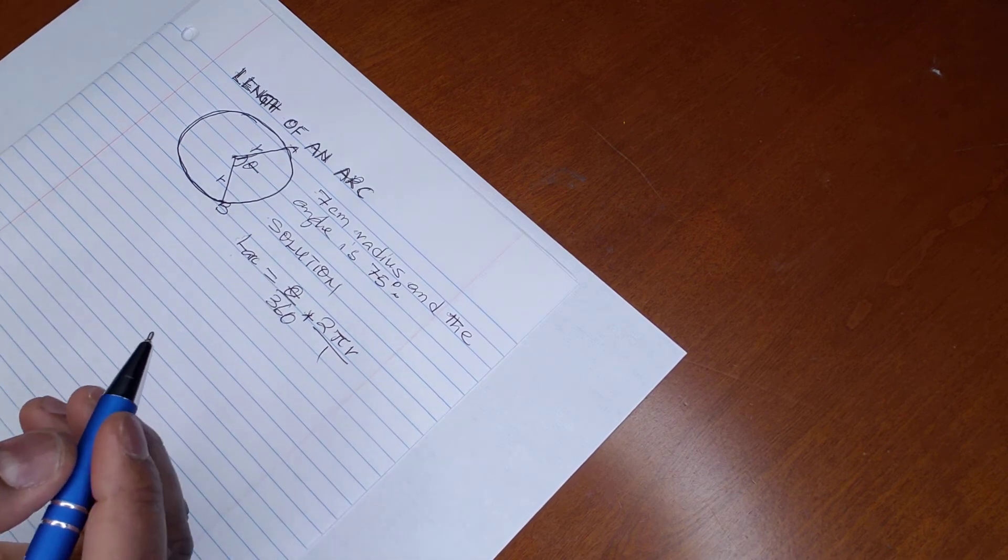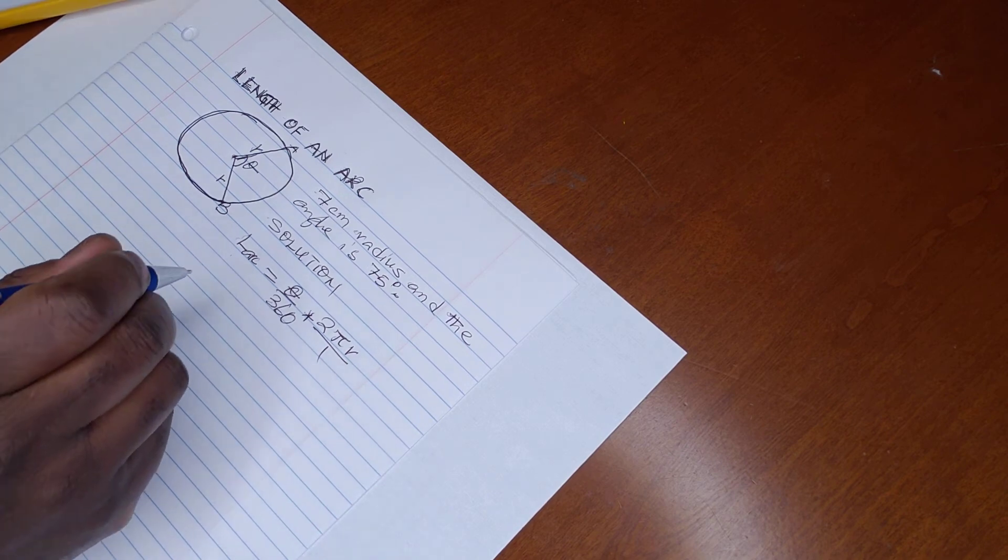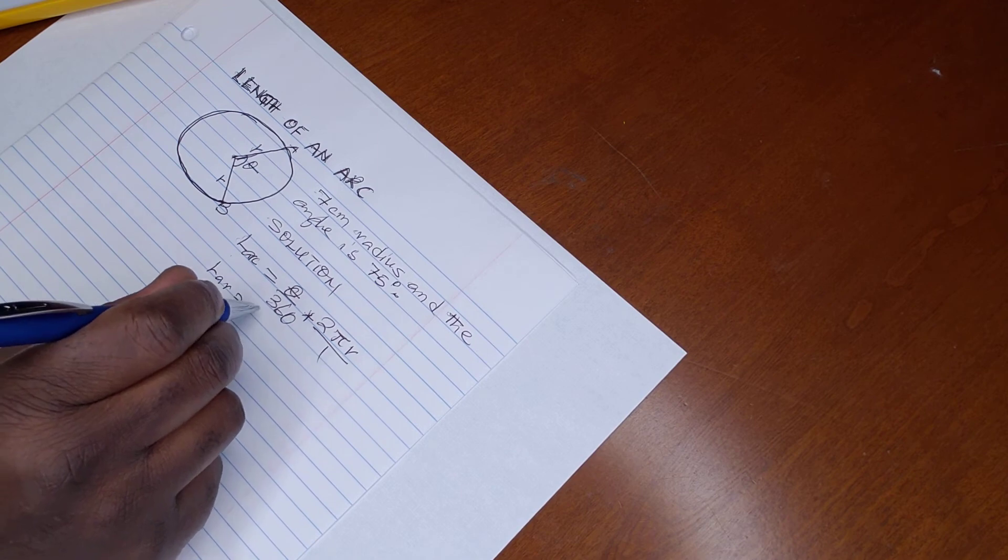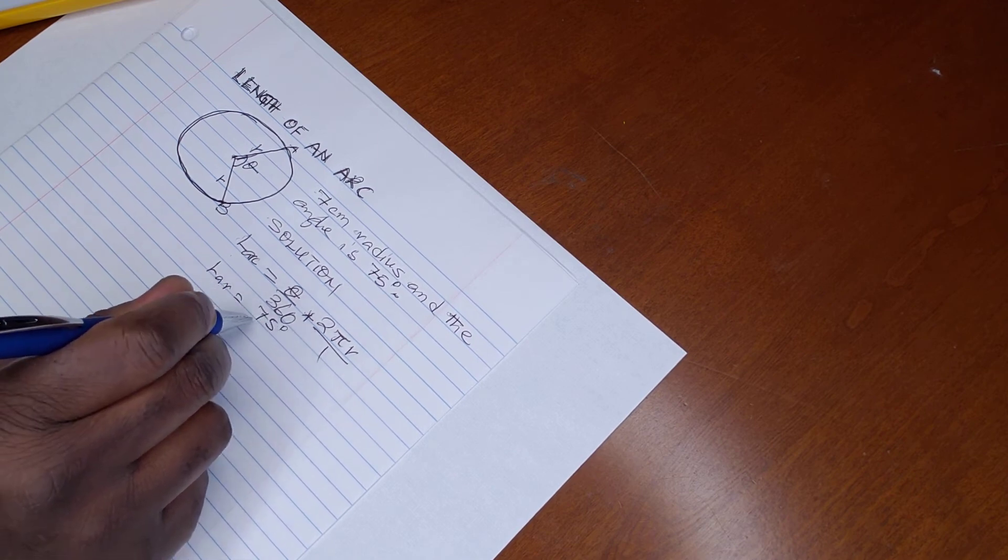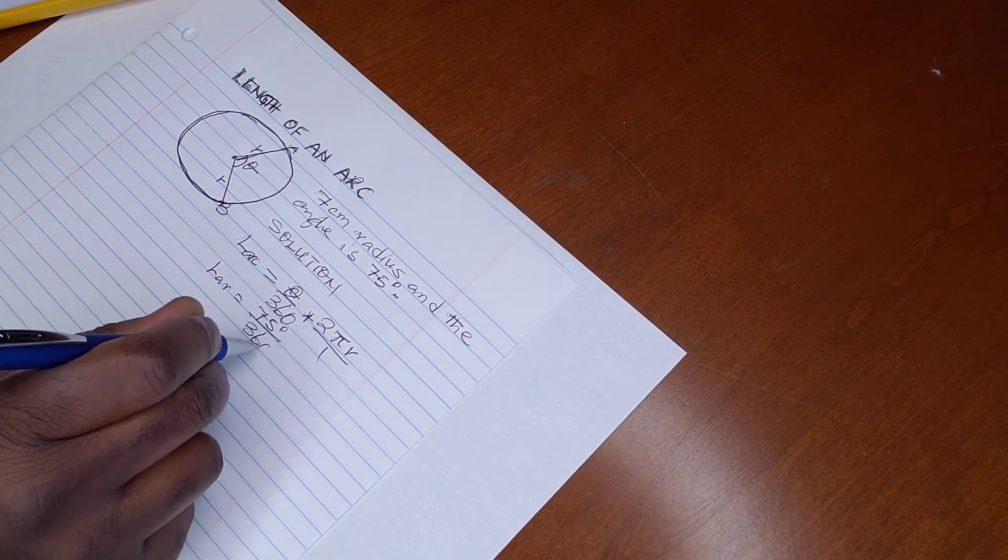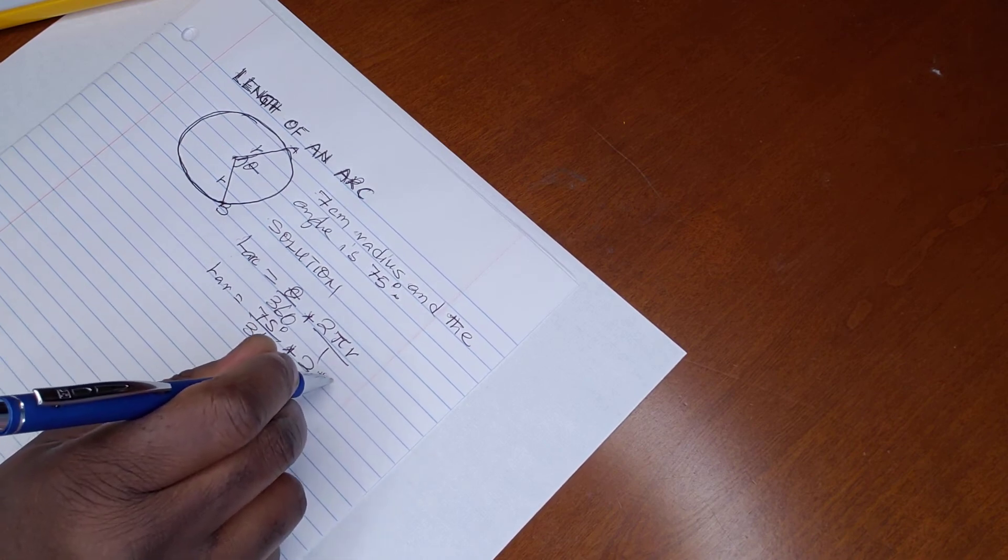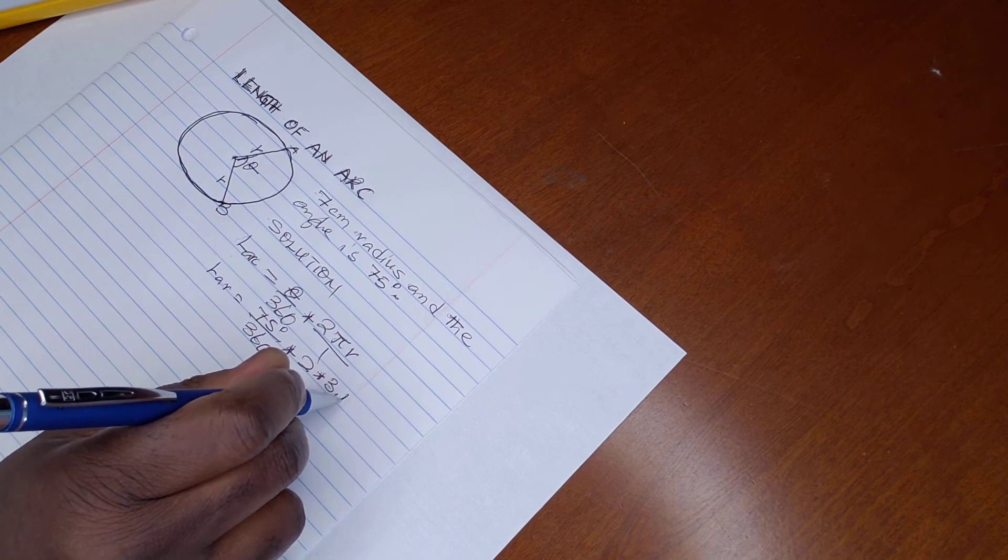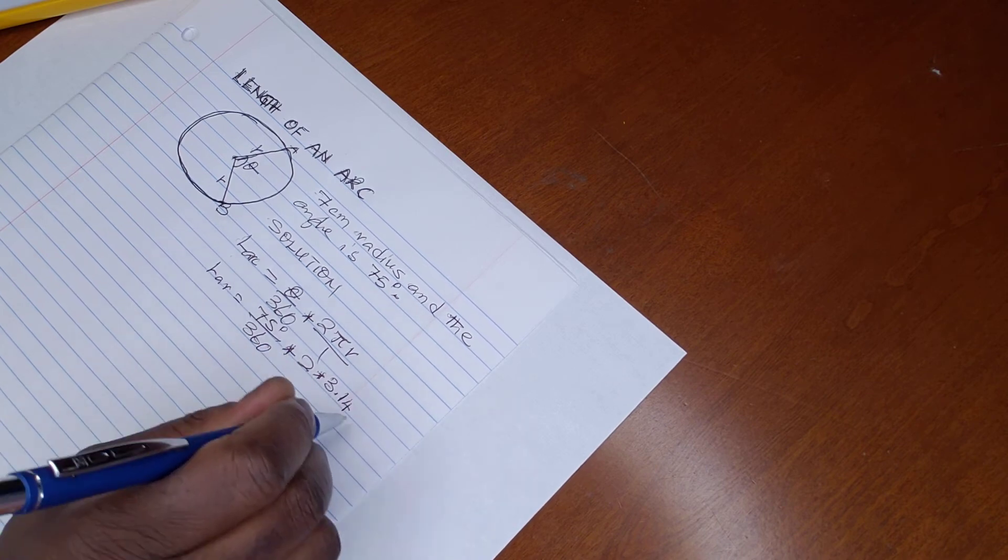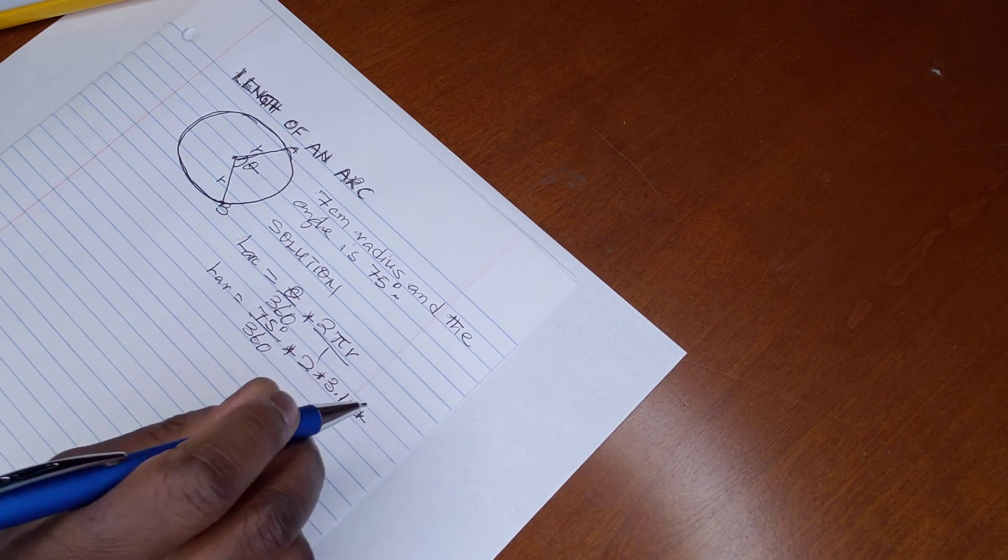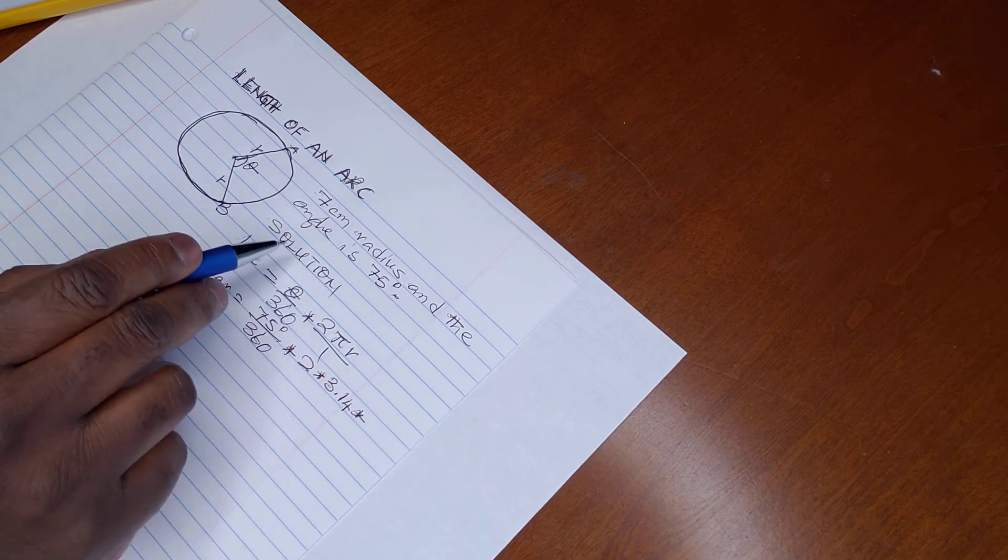So we can say: length of arc equals 75 degrees over 360 degrees, multiplied by 2, multiplied by 3.14 being the constant, and then multiplied by the radius which is 7 centimeters.